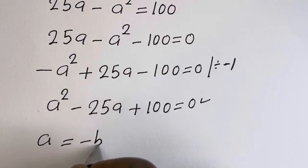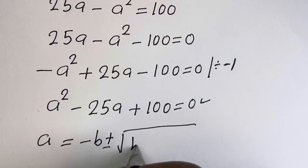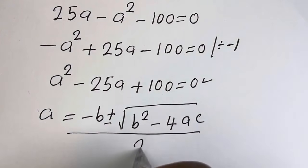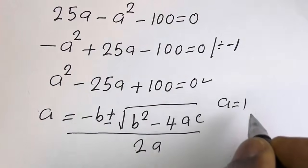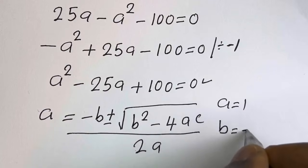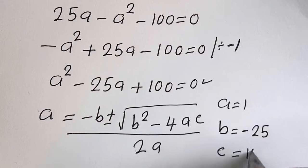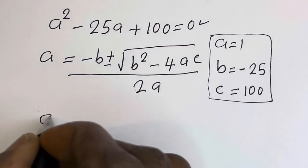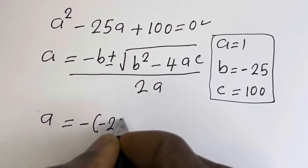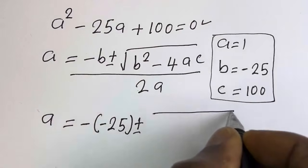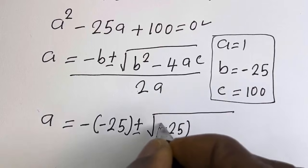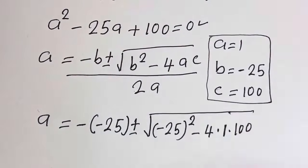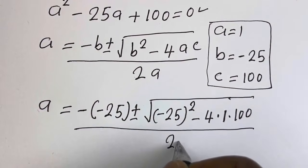A is equal to minus B plus or minus square root of B squared minus 4AC, all over 2A. From this equation, A is equal to 1, B is equal to minus 25, C is equal to 100.